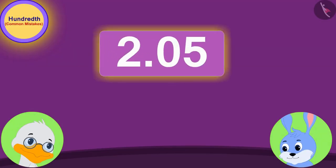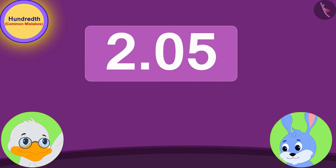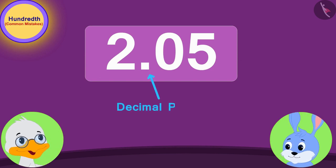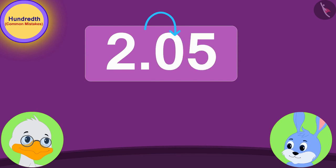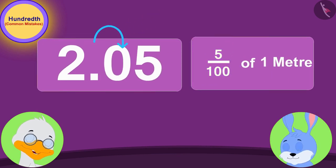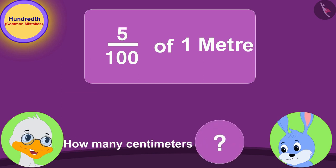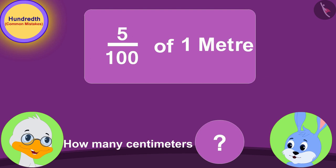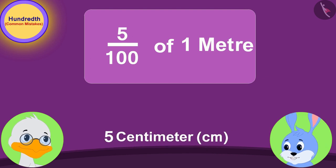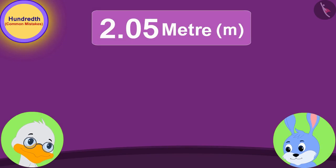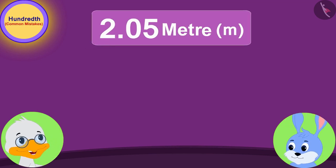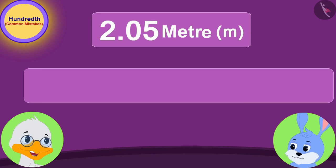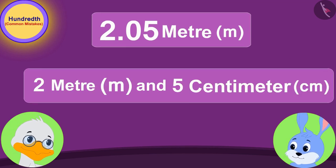Uncle replied: "Look, Bunny dear. In 2.05 meters, the decimal point is followed by 05, which is the 5 hundredths part of a meter. And how many centimeters is 5 hundredths of a meter? It is 5 centimeters." Bunny quickly replied, "Exactly!"